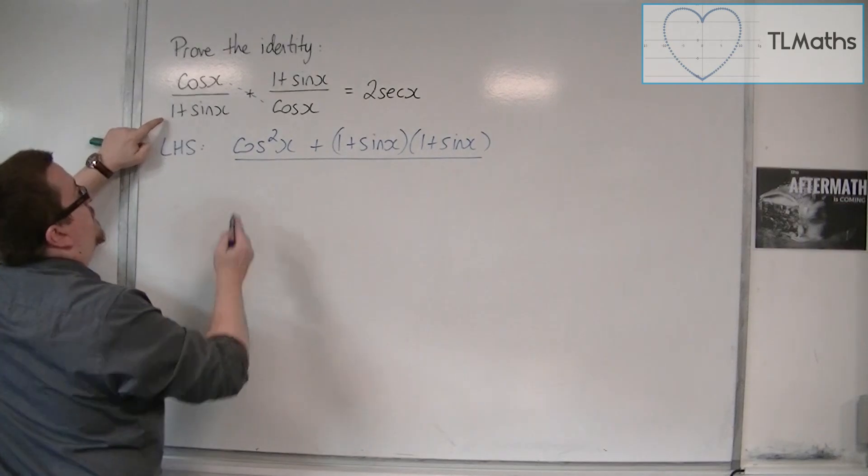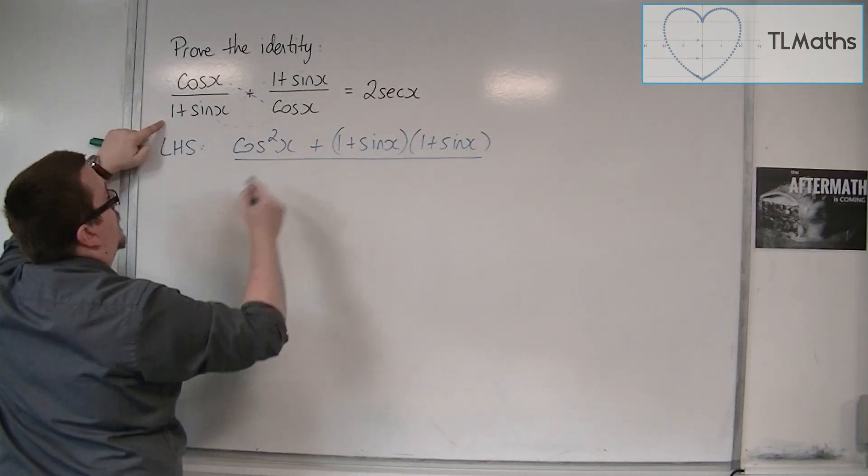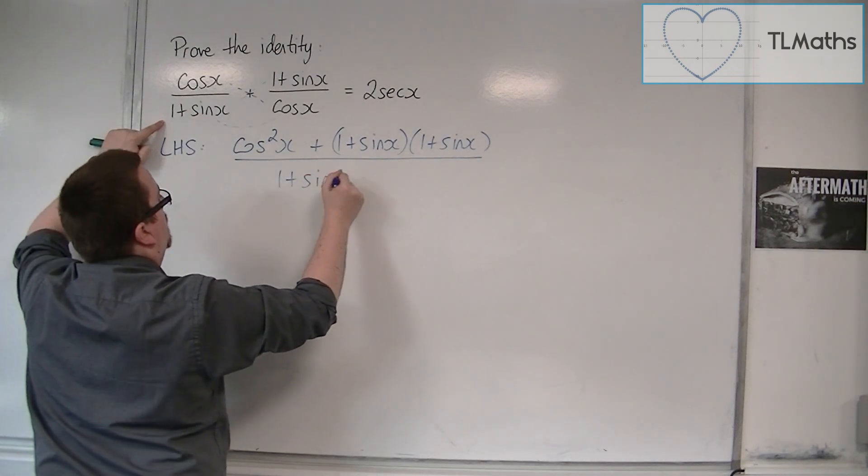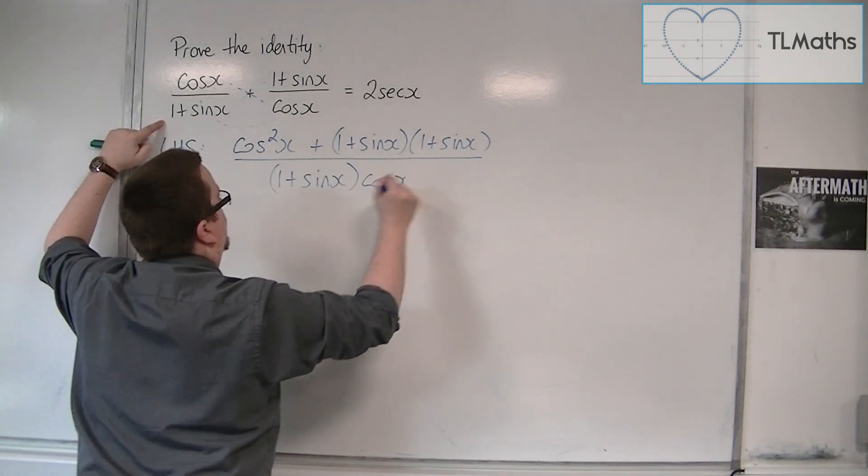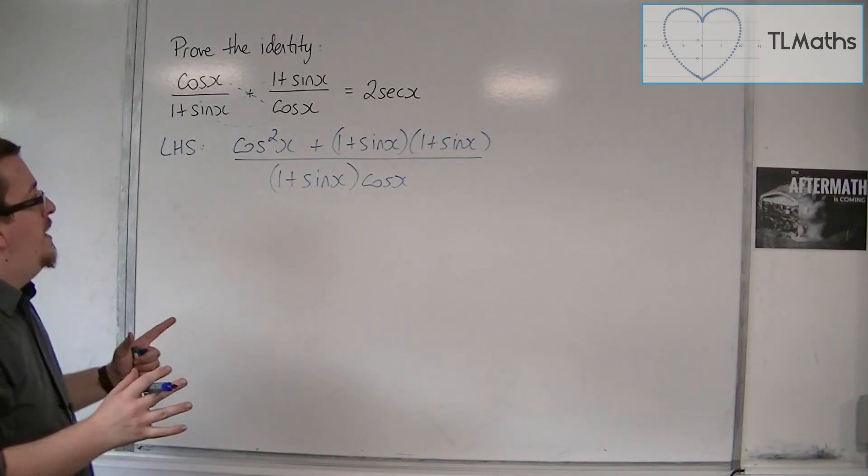And I'm going to divide that by 1 plus sin x times cos x. So 1 plus sin x times cos x. So this is combining the two fractions.